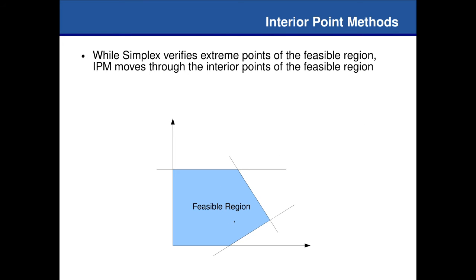Consider we have this feasible region with linear constraints — one here, another, another, and so on. Given any number of linear constraints composing some feasible region, they will always form a convex set. If you study the book entitled Convex Optimization by Boyd and Vandenberghe, you'll see that independently of the number of linear constraints, if those define some feasible region, this region will always be convex. If I connect two points with a line, the line will always traverse inside my feasible set.